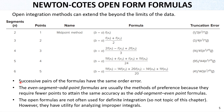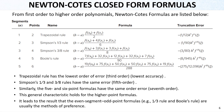Successive pairs of formulas have the same order error. The even-segment, odd-point formulas are usually the methods of preference because they require fewer points to attain the same accuracy as the odd-segment, even-point formulas. The open formulas are not often used for definite integration and are not the topic of this chapter; however, they have utility for analyzing improper integrals.